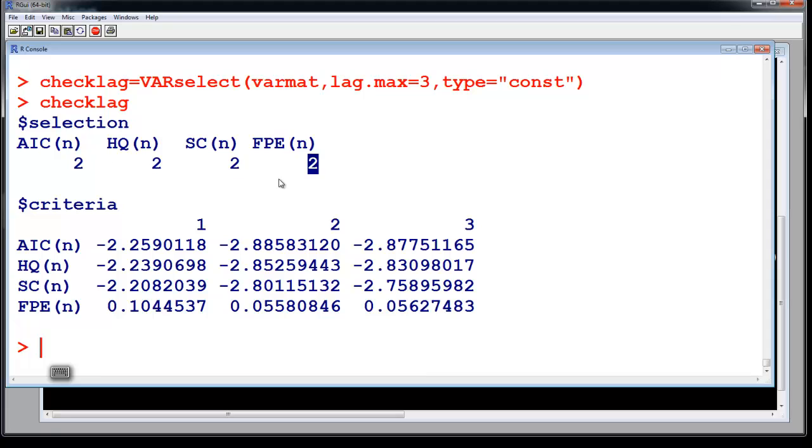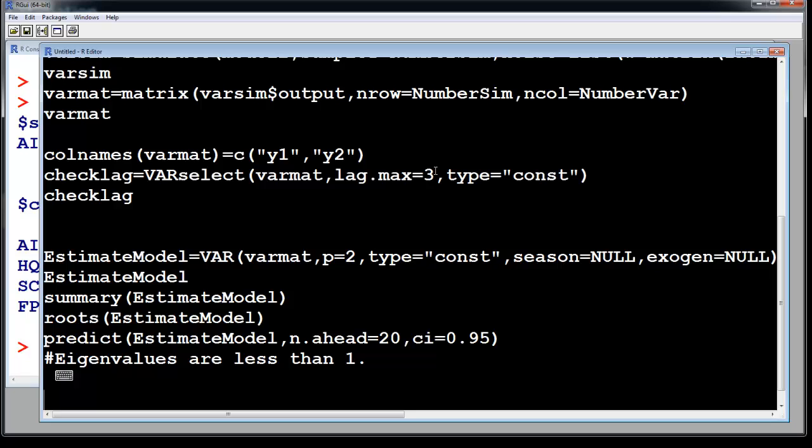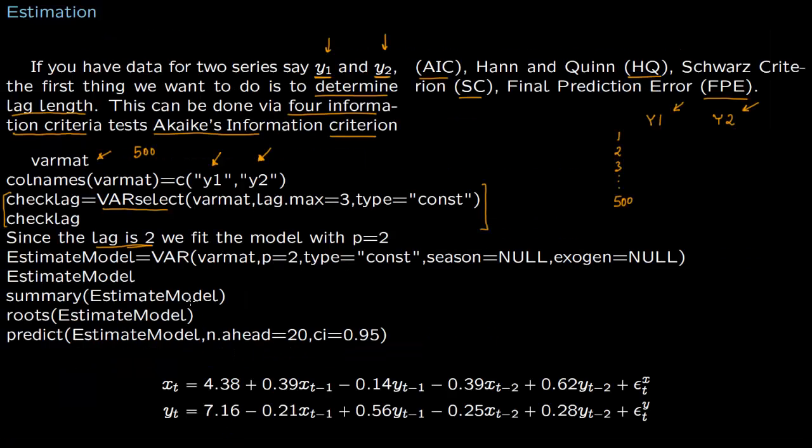Therefore you take number of lags as two. We are testing for maximum lag three, so you can put lag four here also but we are testing for three lags so that the machine runs faster. Now we got to estimate the model and we are going to put p as equal to two.